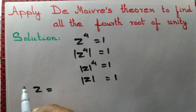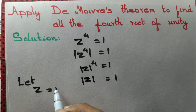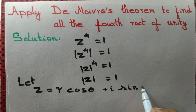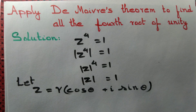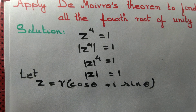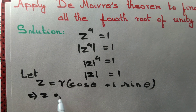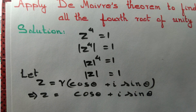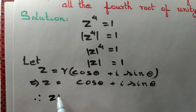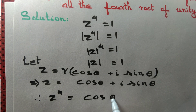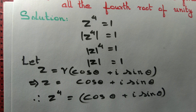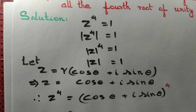Now let's express the complex number in polar form. Let z equal to r cosθ + i sinθ, where r denotes the modulus of the complex number. Here r equals 1, so z equals cosθ + i sinθ. Therefore z to the power 4 equals (cosθ + i sinθ) to the power 4.